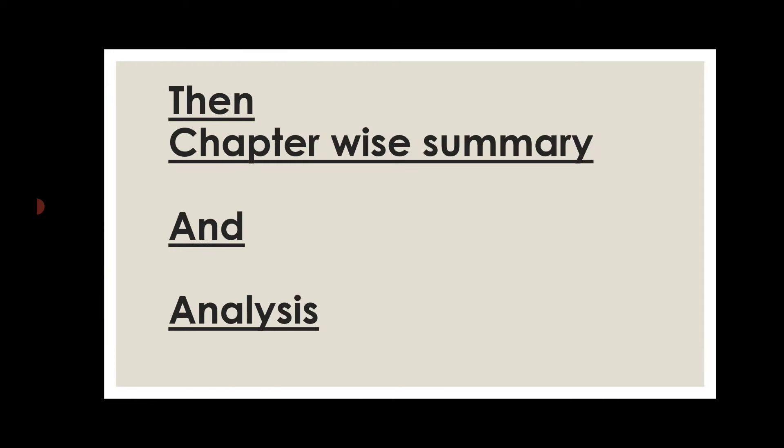You can then start writing a chapter-wise summary — write one page of summary and then one page of analysis. In the analysis, you can write anything you didn't like in that particular chapter, what was required, and any suggestions you want to give. You can add everything you have noticed in that particular chapter.